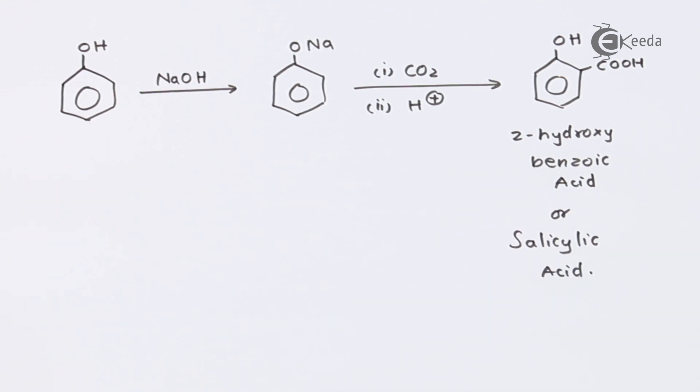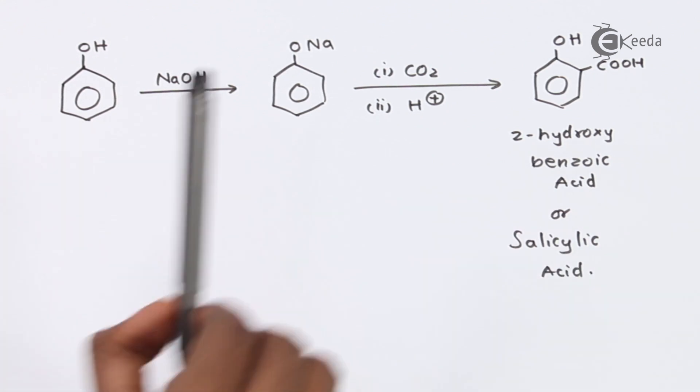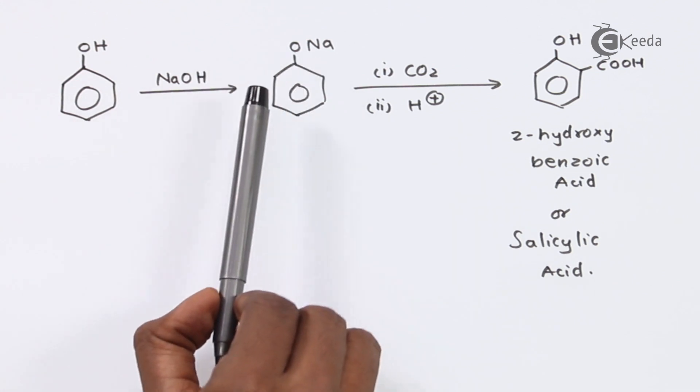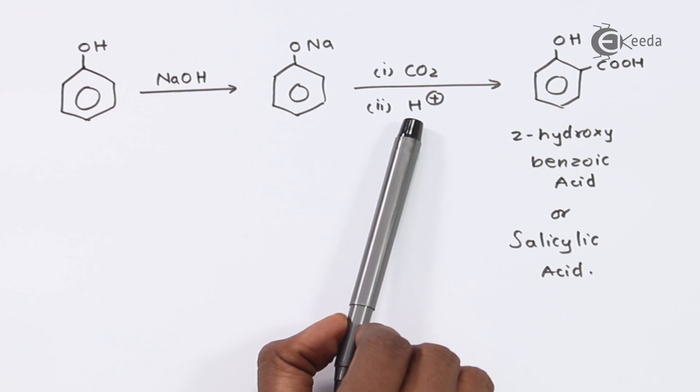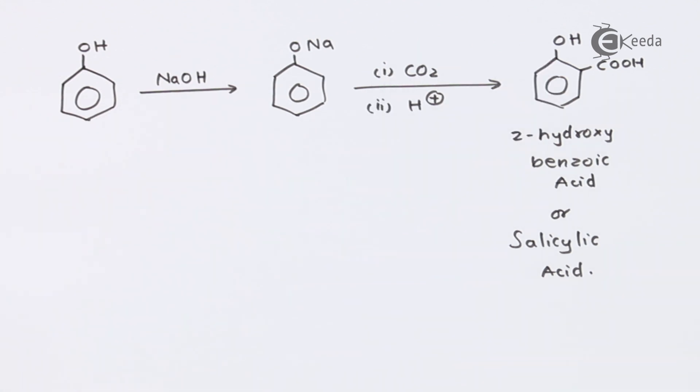So this was nothing but Kolbe's reaction and this is how basically this phenoxide ion or this sodium phenoxide plays a very vital role and because of which it reacts with carbon dioxide in acidic condition to give us orthohydroxybenzoic acid. So this was related to the Kolbe's reaction and that's it.